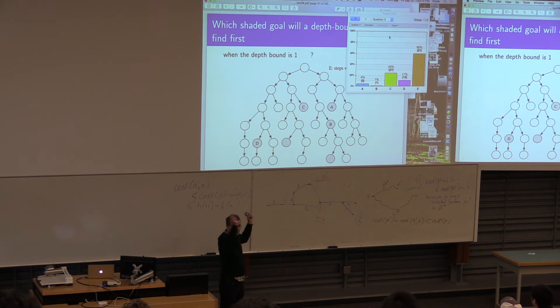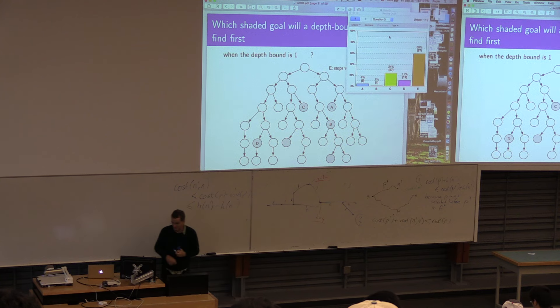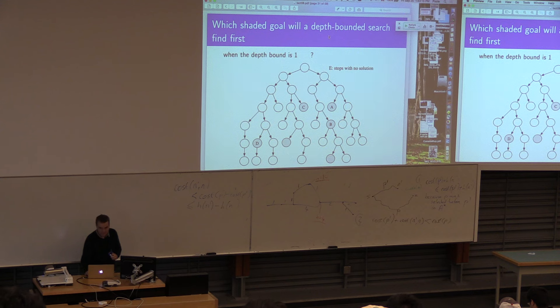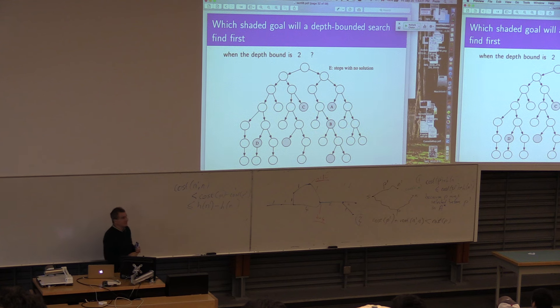We're only going to take paths of length one. Let's do this. What about when the depth bound is two? We're only going to expect paths of length two. What happens?